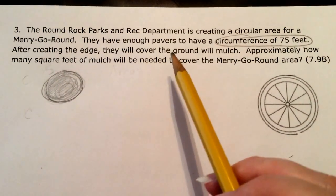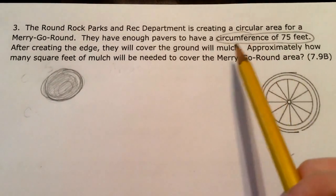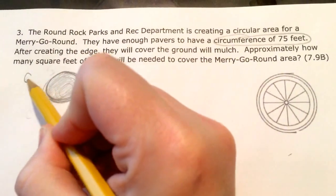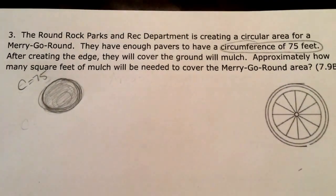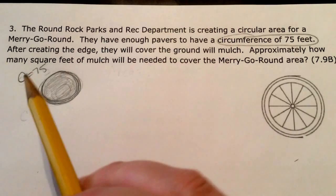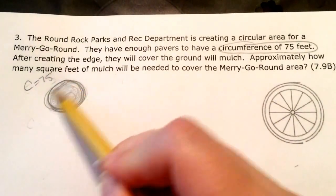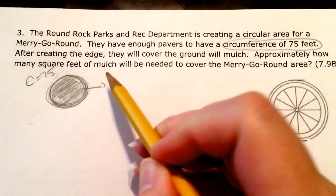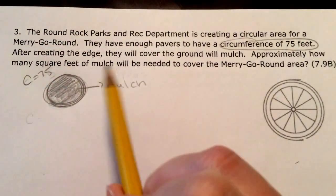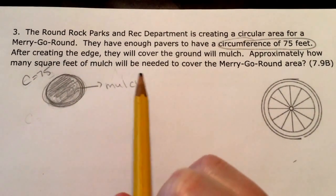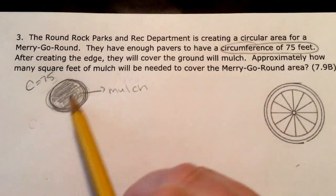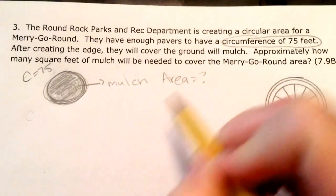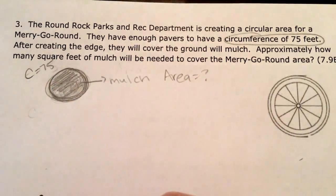Alright, so we start with, they say they have enough for a circumference of 75 feet. So here's my area, and I know circumference is the outer edge, and it's 75 feet. After creating the edge, they're going to cover the ground in mulch. So they're going to cover all of this in with mulch. That's my mulch. Approximately how many square feet of mulch will be needed? So they want to know how much we're going to need for here, and that's area. So that's what I'm looking for, the area. And they gave me circumference.